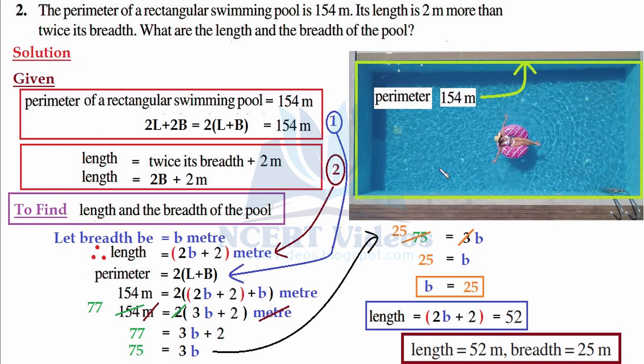That is this distance plus this distance. Since it is a rectangle, this length will be equal to this length and this breadth will be equal to this breadth. That equals 154 meters. That is our first statement.